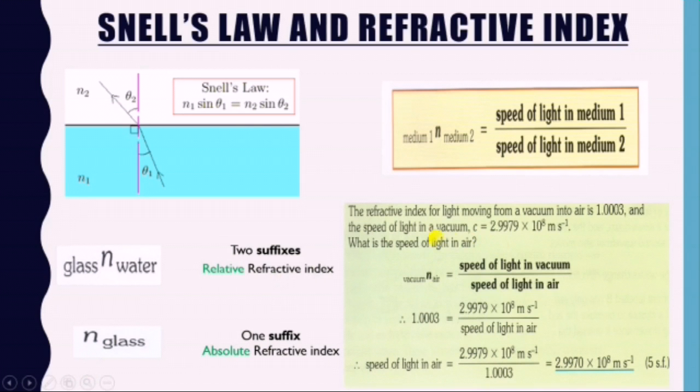Now there is an example that makes use of Snell's law in terms of speed of light. The refractive index for light moving from a vacuum into air is 1.0003, and the speed of light in vacuum c equals 2.9979 times 10 raised to the power 8 meters per second.